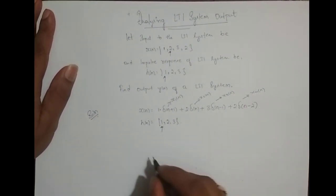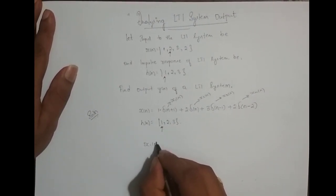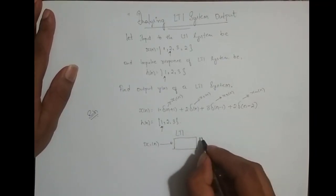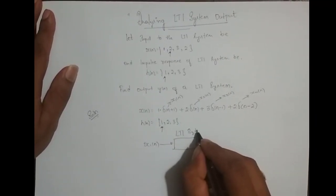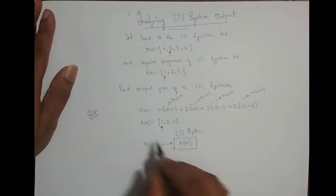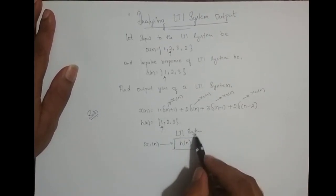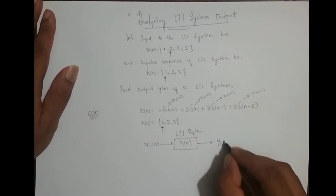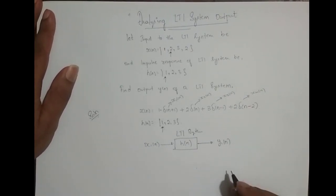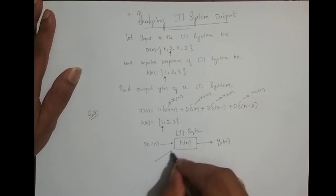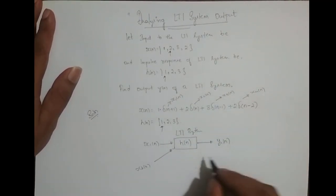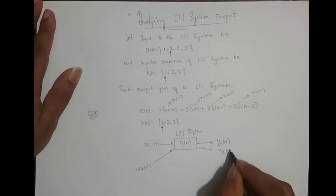So basically what we are doing is we take x1(n) and feed it to an LTI system with impulse response which is given, h(n). And we find what is the output y1(n). For the same LTI system we feed x2(n), and we try to get y2(n).